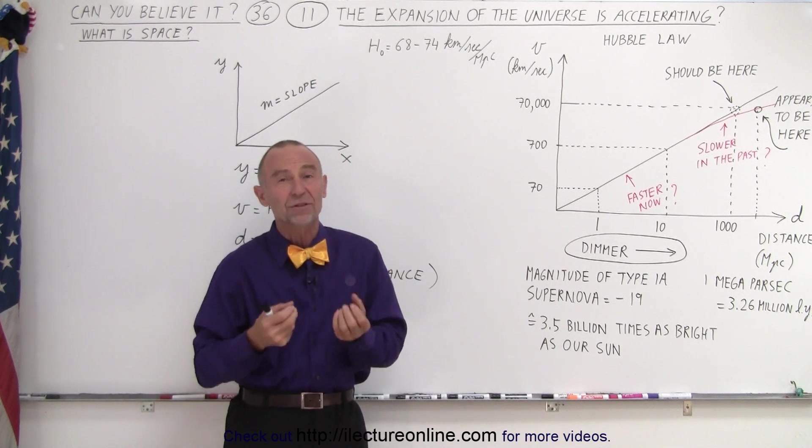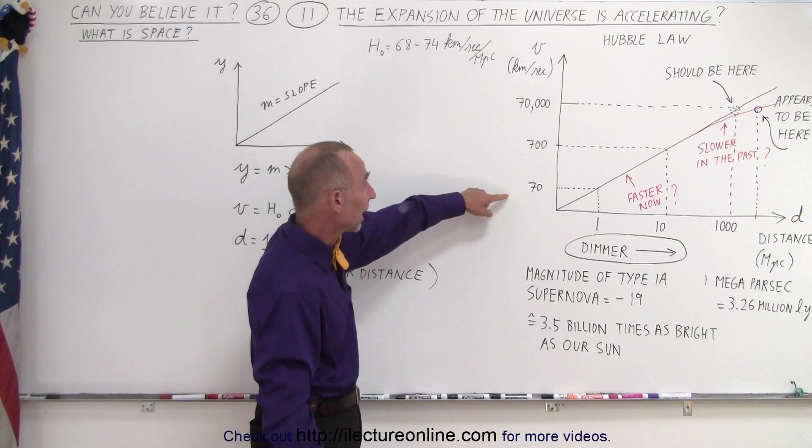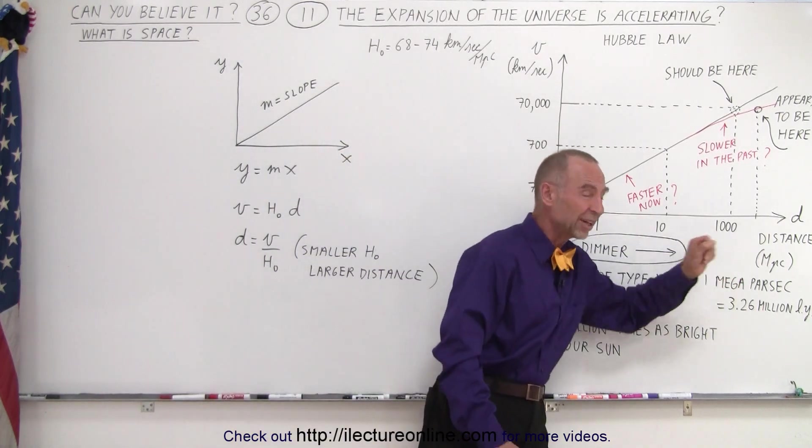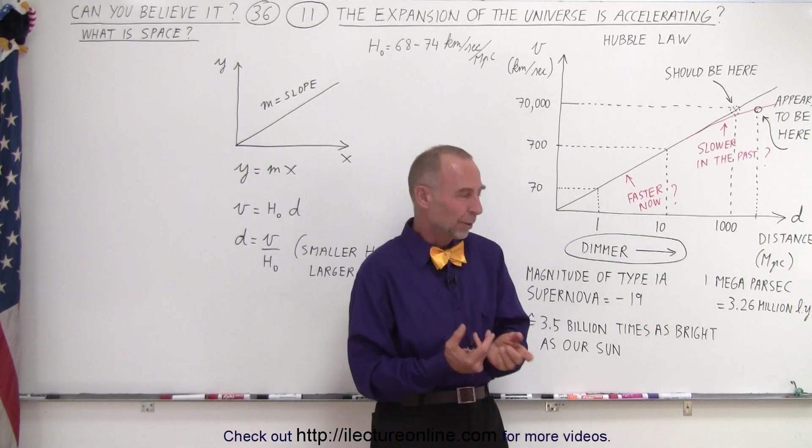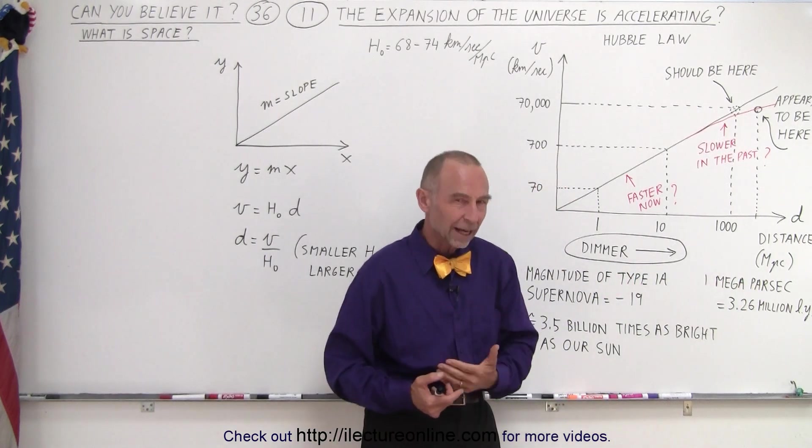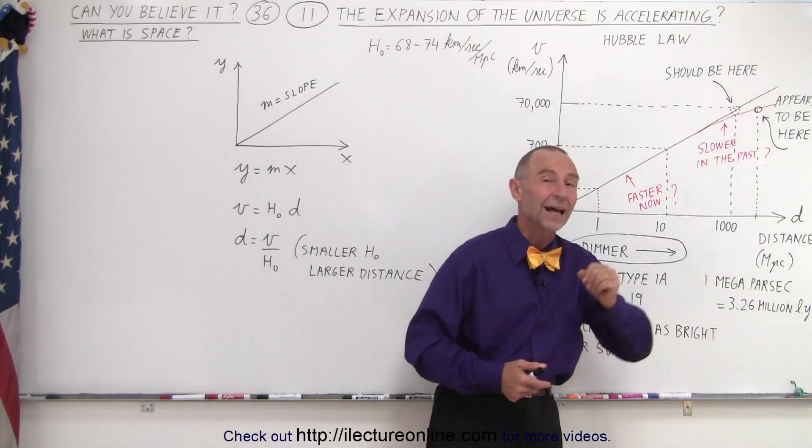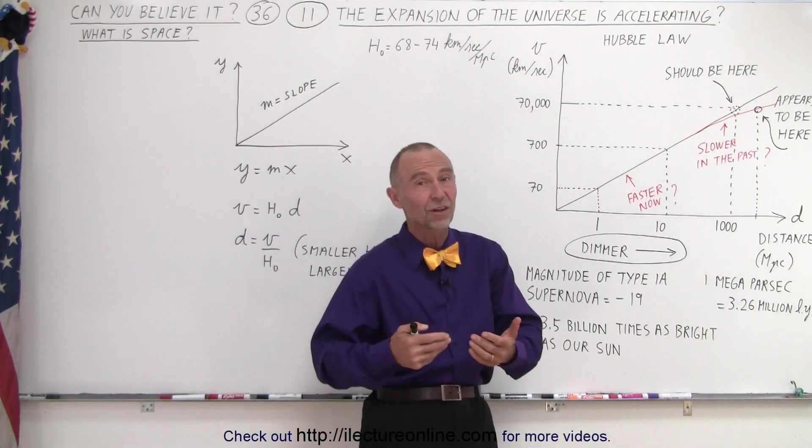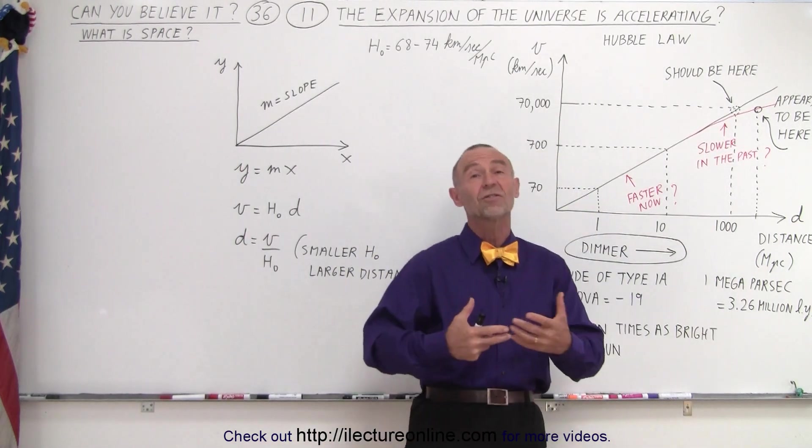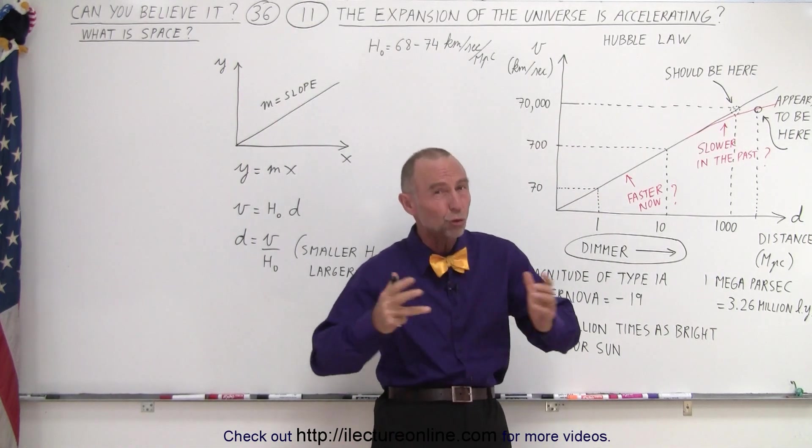Over many years, they determined what that speed was relative to distance. They found that if a galaxy was one megaparsec away—now what's a megaparsec? Mega stands for million, and a parsec is 3.26 light years. So one megaparsec is 3.26 million light years, the distance light travels in 3.26 million years, which is an enormous distance.